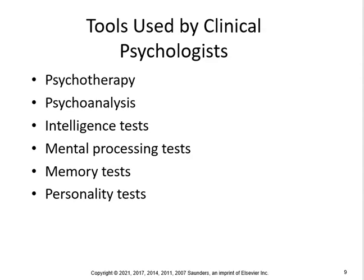Some of the intelligence tests include IQ tests, the Wechsler Adult Intelligence Scale (WAIS), and the Stanford-Binet intelligence test. For personality tests, there's the Rorschach technique using inkblots, and the Thematic Apperception Test (TAT), in which pictures are used as stimuli for making up stories. Both tests are especially revealing for personality structures.